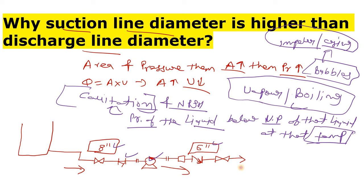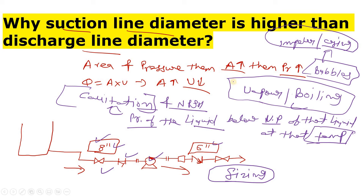While designing and sizing the pump, what we do is give some margin at the suction side of the centrifugal pump. We increase the diameter of the suction side because if we increase the diameter, the area increases, and because of that the pressure increases.